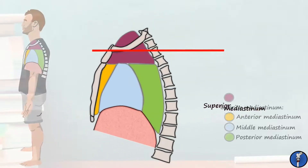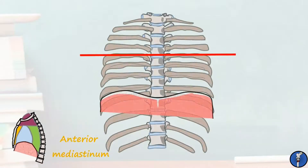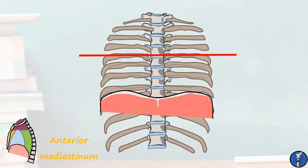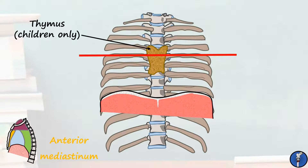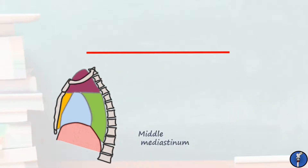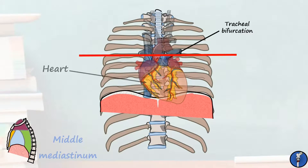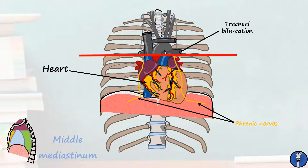Now we've covered the superior mediastinum, let's have a look at the anterior mediastinum. This is a relatively simple region in adults and basically only contains a bit of connective tissue. However, in young children there's a small organ here called the thymus, which helps in the development of the immune system. Next, the middle mediastinum. This is the part of the thorax that contains the bifurcation of the trachea and the heart. Bear in mind that I've removed the pericardium here to help us orient ourselves. The only other significant structures to note here are the left and right phrenic nerves, which have continued their descent from the superior mediastinum.